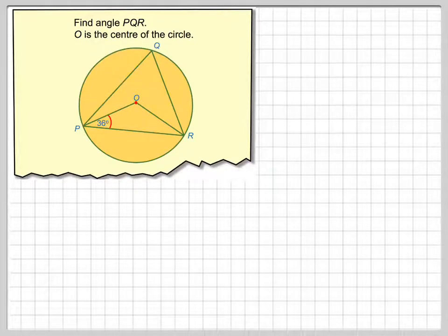So find angle PQR. That's going to be that one there. O is the centre of the circle.